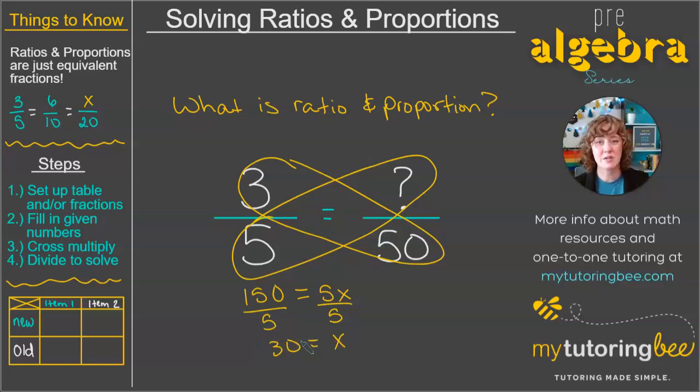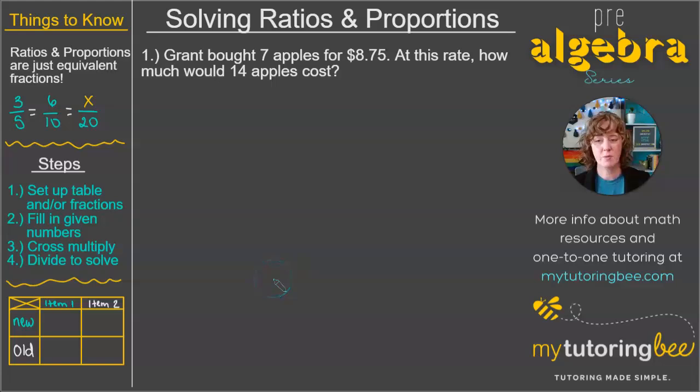Let's see how this works in word problems. Here we have a word problem where Grant bought 7 apples for $8.75. At this rate, how much would 14 apples cost? So we know that we need two fractions that are going to be equivalent to each other, but the tricky part about word problems is sometimes it's hard to know where each of those numbers goes. So what I like to use is a chart.